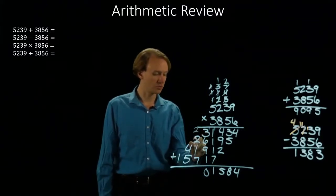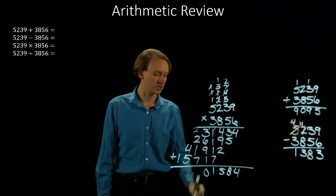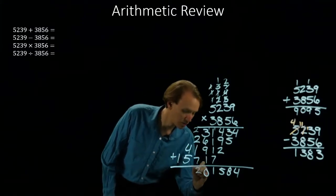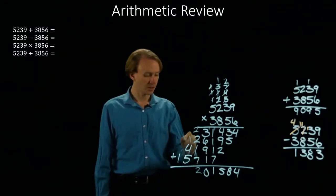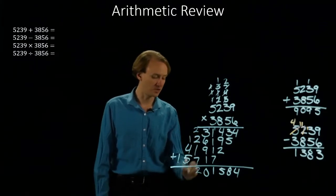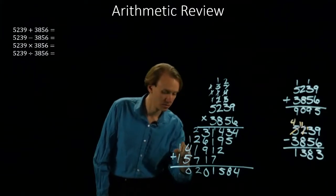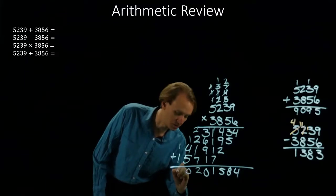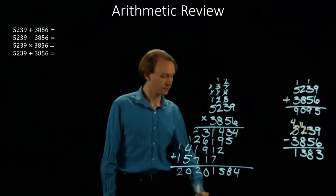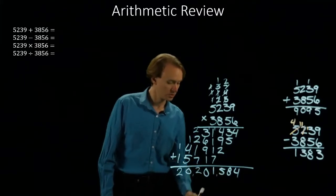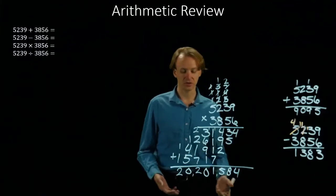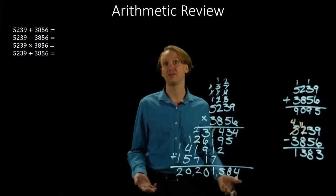2 plus 2 is 4, plus 1 is 5, plus 7 gives me 12. Then 1 plus 4 is 5, plus 5 is 10. And then 1 plus 1 is 2. So I get the number 20,201,584.